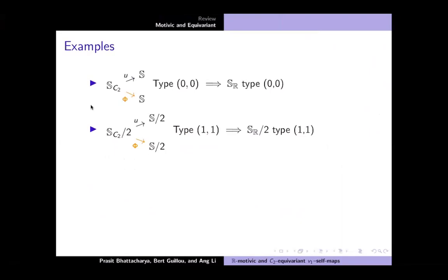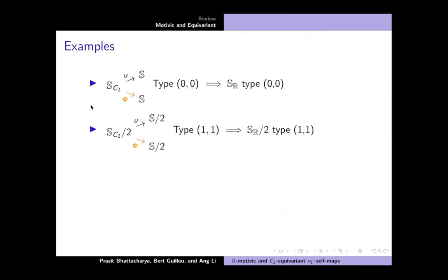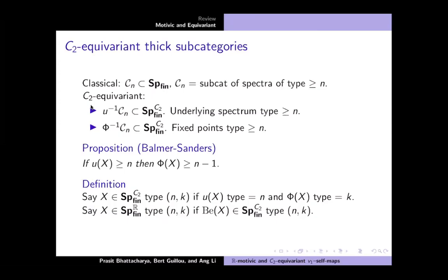Audience question: are Balmer and Sanders saying the thick subcategories are exactly the type (N, K) ones? Response: yes — the thick subcategories are intersections of U^{-1}C_N and Phi^{-1}C_K, giving two singly-graded families of thick subcategories with containment relations between them.